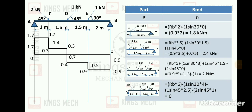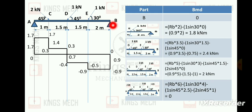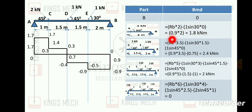After the SFD, we go for the BMD — bending moment diagram. There is no load at the starting point, so the bending moment is 0 at the start. At point E, we have Rb covering a distance of 2 meters, so Rb into 2. The 1 sin theta component is also considered at its working point, giving Rb into 2 = 1.8 kilo newton meter.